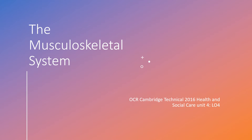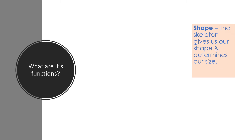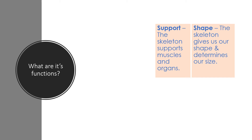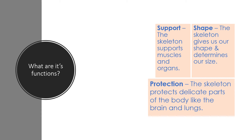This is a lesson on the musculoskeletal system. What are the functions of the musculoskeletal system? Number one, it gives us a shape and helps determine our size. It gives us support, supporting our muscles and our organs. It's there to protect our delicate organs — for example, our skull protects our brain and our ribs protect our lungs.